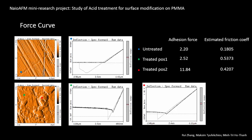The results show that after the acid treatment, the estimated friction coefficient becomes much larger, and the adhesion force on the flat area of the treated sample is comparable to that on the untreated one. However, the adhesion force on the feature becomes much larger. This can be explained by the treatment on the sample working in an inhomogeneous way.